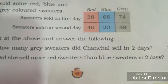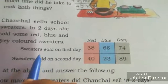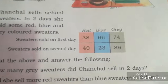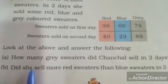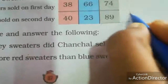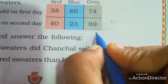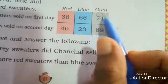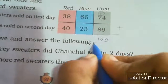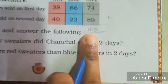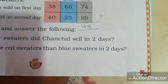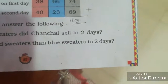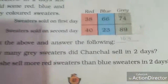How many grey sweaters did Chancel sell in 2 days? Grey sweaters on the first day: 74. Grey sweaters on the second day: 89. We add them: 4 plus 9 is 13, carry 1; 7 plus 1 is 8; 8 plus 8 is 16. So totally 163 grey colour sweaters. Chancel sold 163 grey sweaters in 2 days.